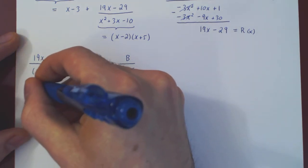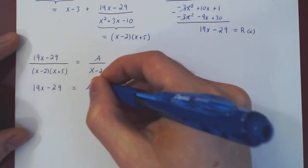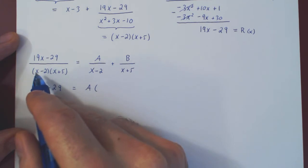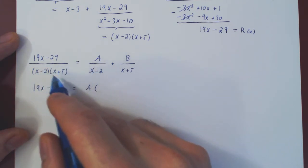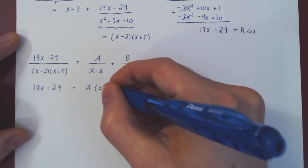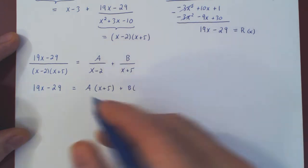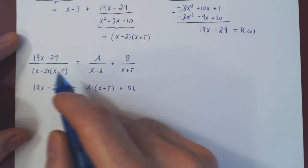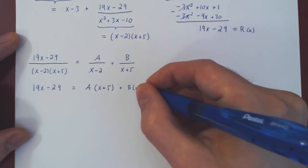Which will give us that 19x minus 29 is equal to A times x plus 5, plus B times x minus 2.